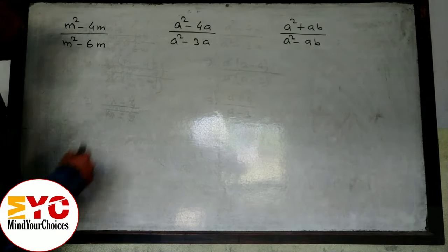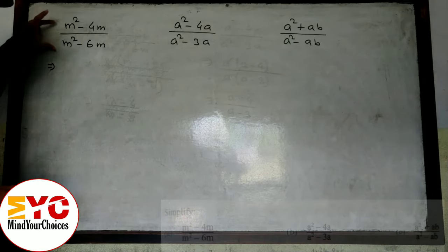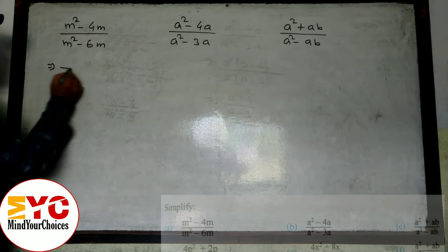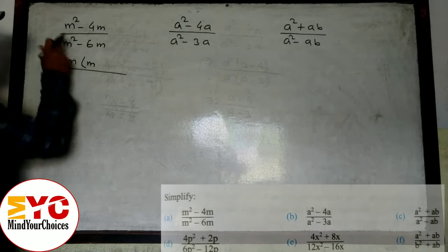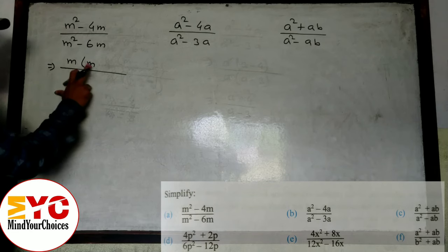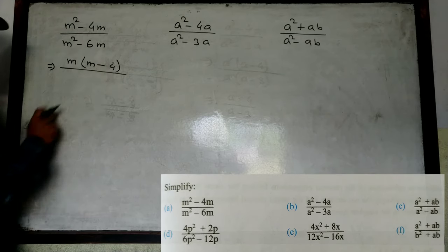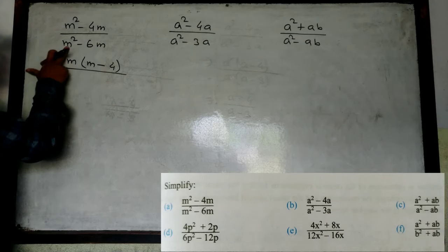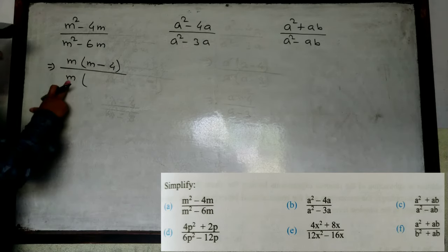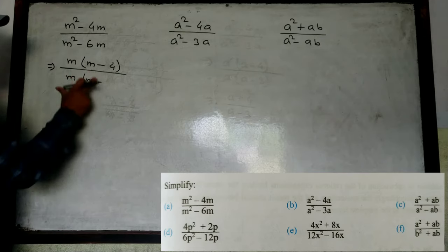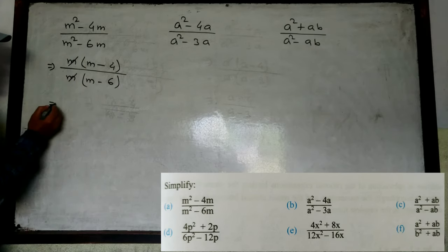Let's start. In simplification, first of all we have to take common. Look here: what is the common from M² - 4M? Common is M. From M², M is common, so remaining is M. M is already common, so remaining from 4 is 4. Similarly in the denominator, M² - 6M: M is common, so remaining is M minus 6.